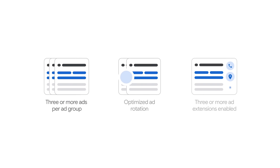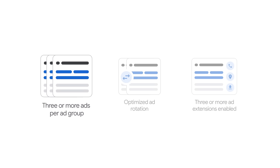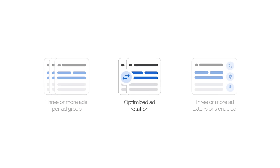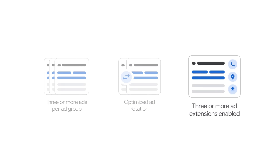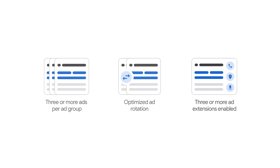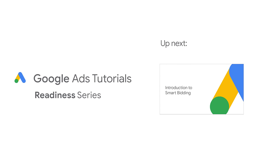To follow these three best practices, log in to your Google Ads account to ensure that you have one responsive search ad and two expanded text ads in each ad group, optimize ad rotation selected, and ad extensions enabled. Next up, learn how to choose the smart bidding strategy for your campaign.